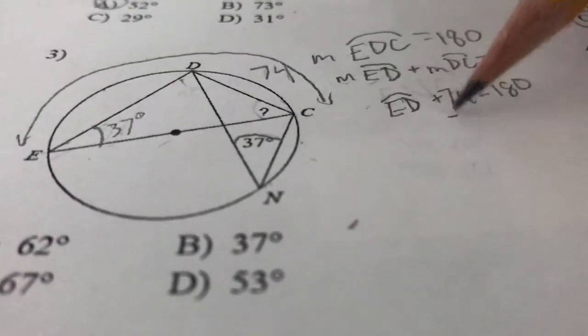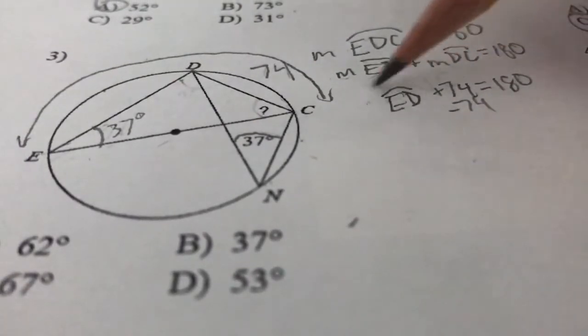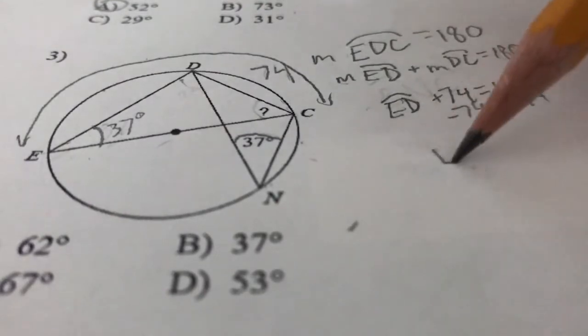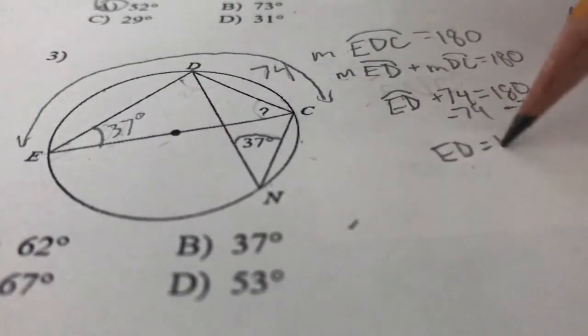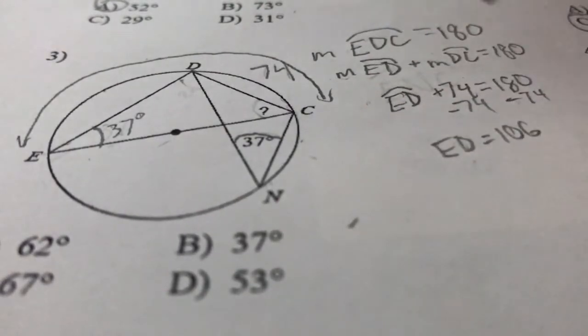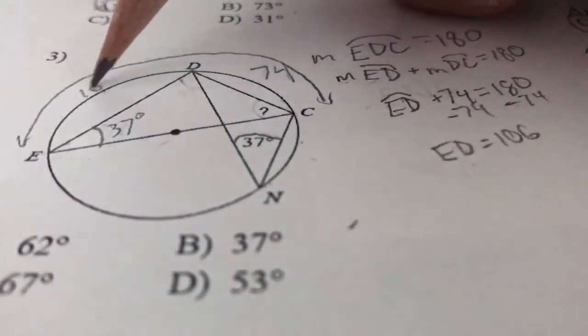From there, I can subtract 74 from both sides to get ED. I'm going to end up with ED equals 106. So over here, I'm going to label that 106.